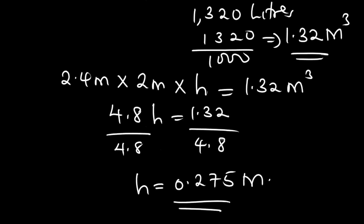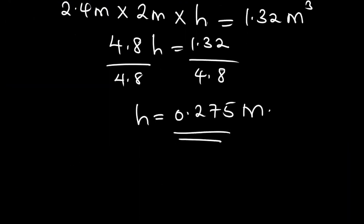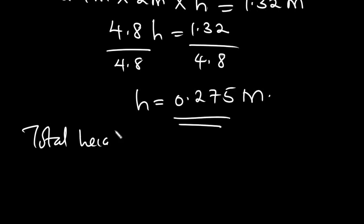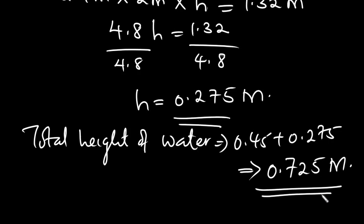The question asks for the total height of water in the tank. The water was previously at a height of 0.45 meters and we have added another 0.275 meters. So in total, the total height of water in the tank is 0.45 plus 0.275, which equals 0.725 meters.